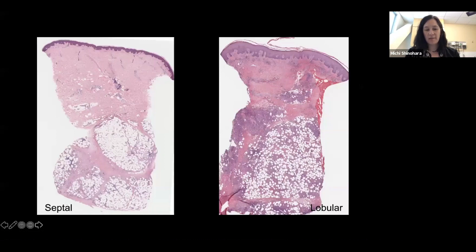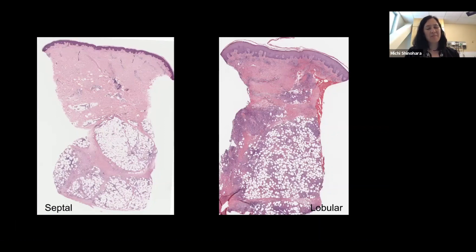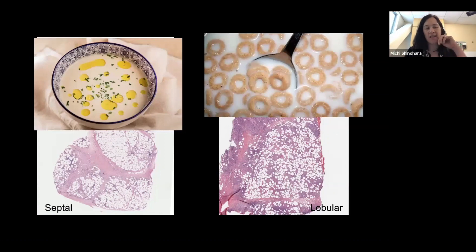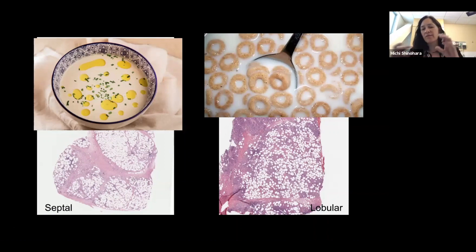Here are two examples: on the left, septal — so we know that has to be erythema nodosum because that's your only choice — and on the right, a nice lobular. Sometimes they're kind of messy and you can't really tell. The analogy I like from one of the dermpath textbooks is that septal panniculitis looks kind of like chicken soup — like fat on top of soup — while lobular panniculitis is more like Cheerios floating in milk.